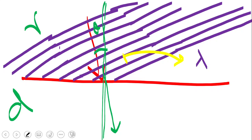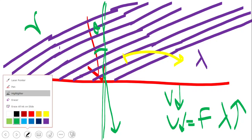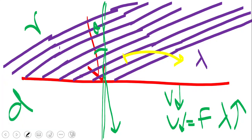Since it is going into a denser medium, it slows down — velocity decreases. From the wave equation v = fλ, since frequency remains the same, if velocity decreases then wavelength must also decrease. So the refracted wave fronts are more closely spaced, meaning the wavelength is shorter in the denser medium.